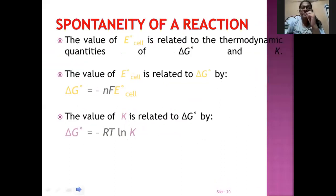Spontaneity of a reaction. The value of E0 cell is related to thermodynamic quantities Delta G0 and K. The value of E0 cell is related to Delta G0 by Delta G0 equals minus NF E0 cell. The value of K is related to Delta G0 by Delta G0 equals minus RTlnK.